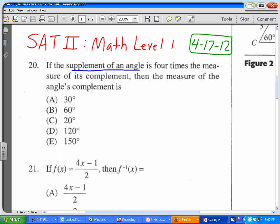The supplement of an angle is always 180 minus the angle, x, is 4 times the measure of its complement. Well, the complement is always 90 minus the angle, x.